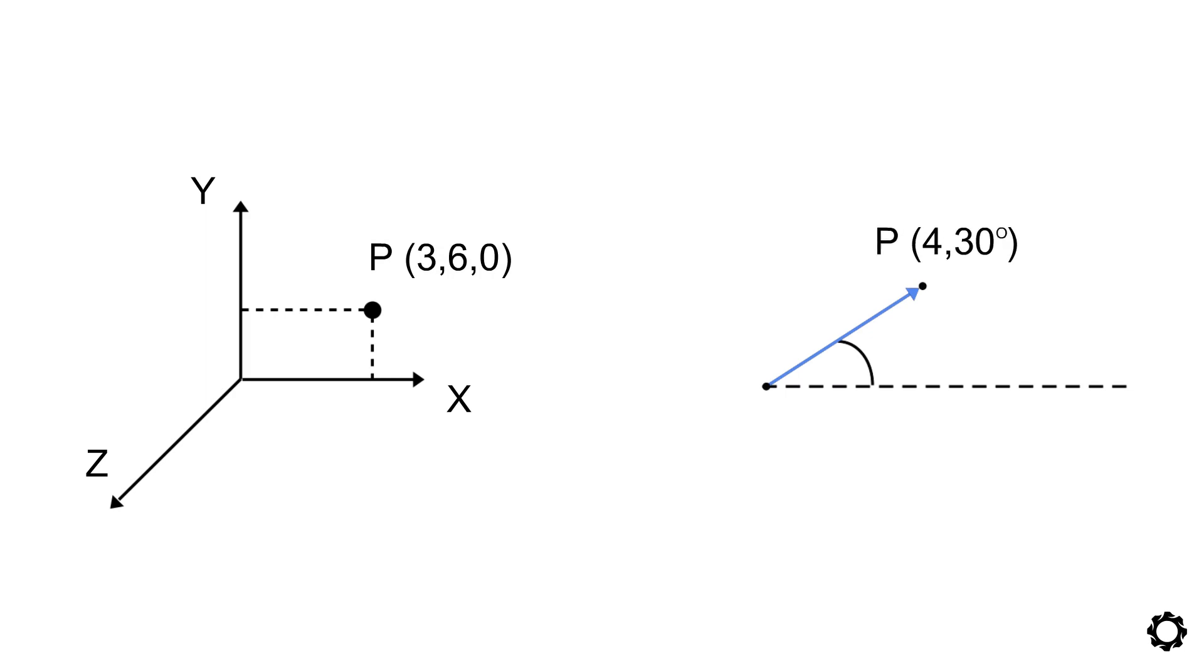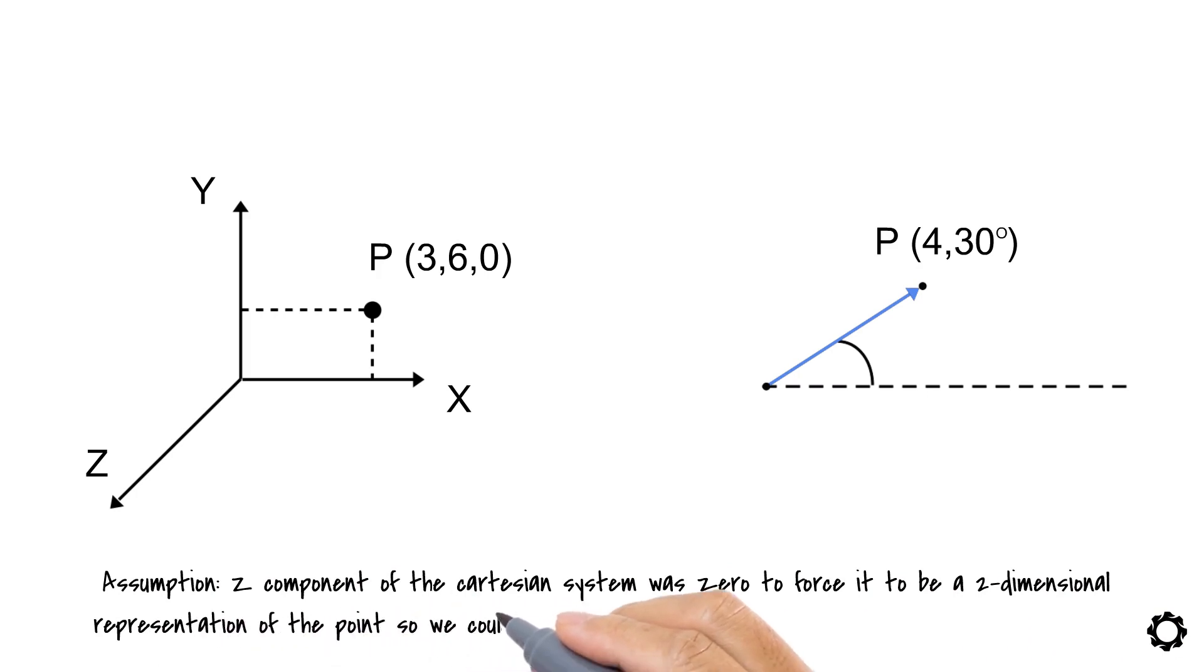Notice that we assumed, for this example, that the z component of the Cartesian coordinate system was 0, to force it to be a two-dimensional representation of the point. So we could use the polar coordinate system for comparison purposes.